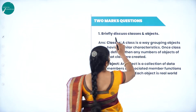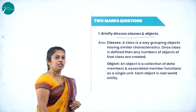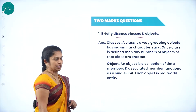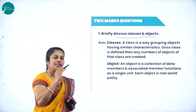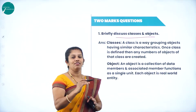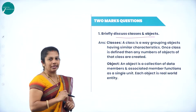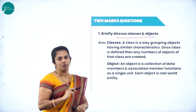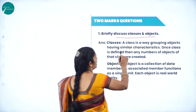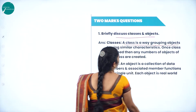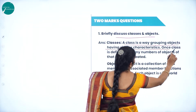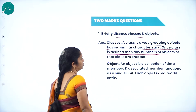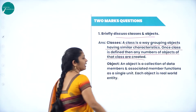For five marks, you may expect: briefly discuss classes and objects, or a question on what is class and object. An object is a real-time entity having some characteristics and behavior. A class is a collection of objects having the same characteristics and behavior. Once a class is defined, any number of objects of that class can be created.